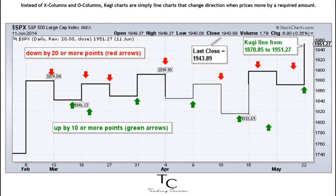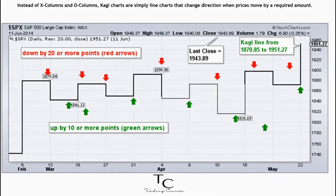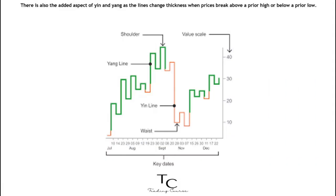Instead of X columns and O columns, Kagi charts are simply line charts that change direction when prices move by a required amount. There is also the added aspect of yin and yang, as the lines change thickness when prices break above a prior high or below a prior low.